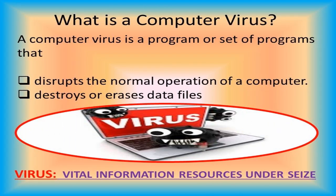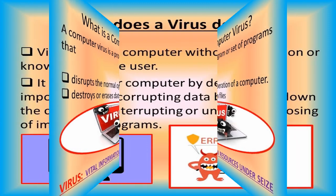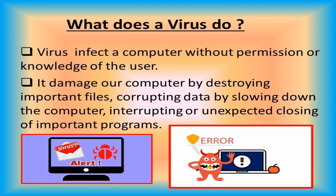A computer virus is a program or a set of programs that causes disturbance in the normal functioning of our system. A virus infects the data and enters the computer without the permission or knowledge of the user. It infects or destroys data. Essential resources like memory, processing speed, data, and programs get damaged when a virus spreads into the system. A virus slows down the system and interrupts while opening and closing.